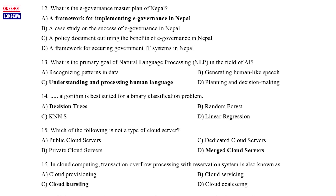Question 13: What is the primary goal of natural language processing (NLP) in the field of AI? a. Recognizing patterns in data, b. Generating human-like speech, c. Understanding and processing human language, d. Planning and decision-making. Question 14: Which algorithm is best suited for a binary classification problem? a. Decision trees, b. Random forest, c. KNN, d. Linear regression.